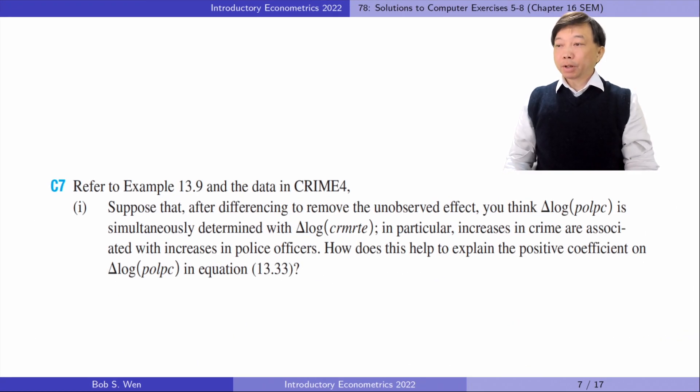Let's find answers to computer exercise 7. It is about example 13.9, county crime rates in North Carolina. In part 1, suppose that after differencing to remove the unobserved effect, you think delta log crime rate is simultaneously determined with delta log police per capita. In particular, increases in crime are associated with increases in police officers. What does this help to explain the positive coefficient on delta log police per capita in equation 13.40?